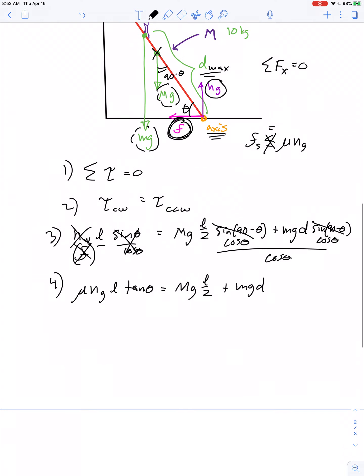So if we're trying to solve for d, we should say mgd equals, now wait a minute, normal force of the ground can be substituted as well, right? We can replace that with the sum of both masses multiplied by g. So we have mgd equals μ times (M plus m)g L tangent theta minus capital Mg L over 2.